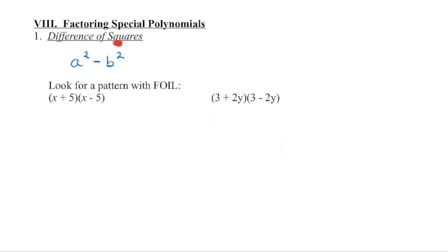A difference of squares is when we are subtracting two perfect squares. We're going to begin with the factors and expand them using the foiling process because we're multiplying a binomial times a binomial, and then we're going to look for a pattern that will allow us to factor a difference of squares polynomial.